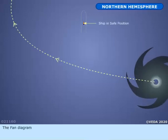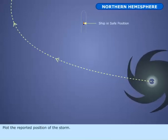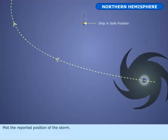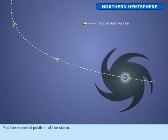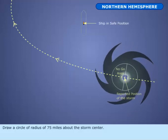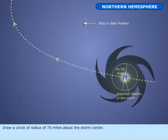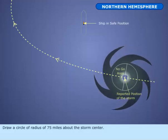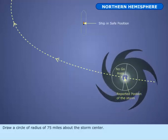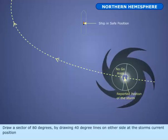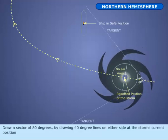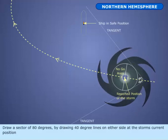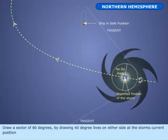The Fan Diagram. Plot the reported position of the storm. Draw a circle of radius of 75 miles about the storm center. Draw a sector of 80 degrees by drawing 40-degree lines on either side at the storm's current position.